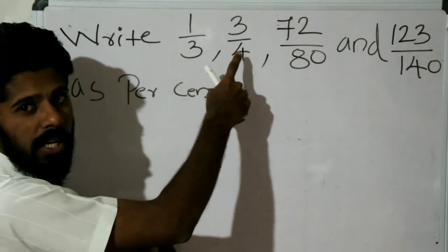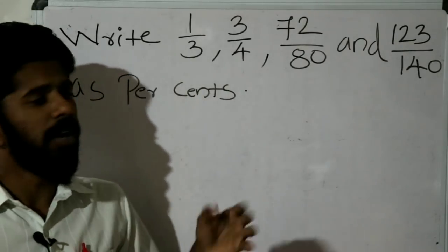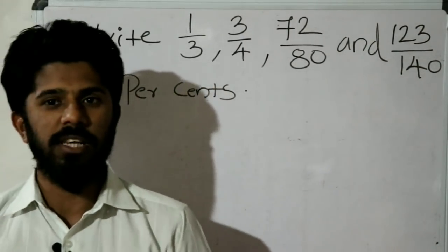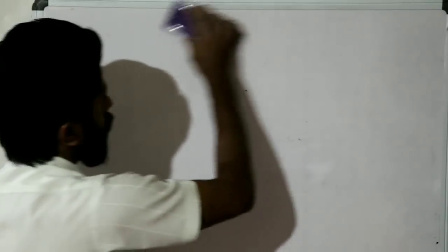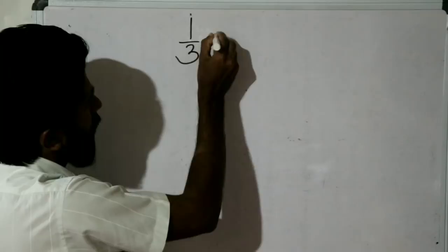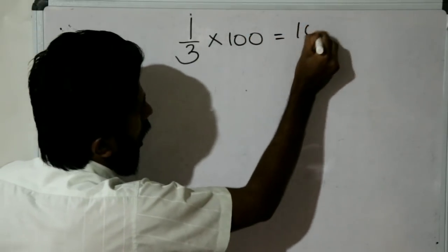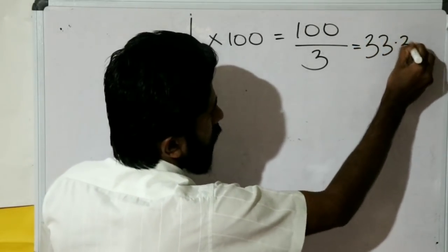Alright, the problems are: 1/3, 3/4, 72 divided by 80, and 123 divided by 140 — as percentages. Let's discuss the first problem. 1/3 as a percentage: 1/3 into 100 is equal to 100 divided by 3. Therefore the answer is 33.3 percentage.